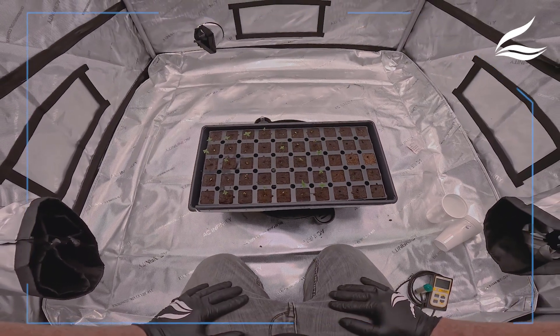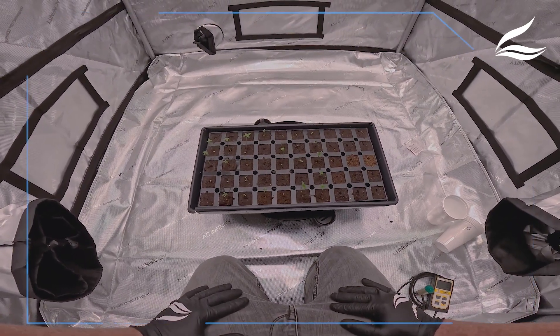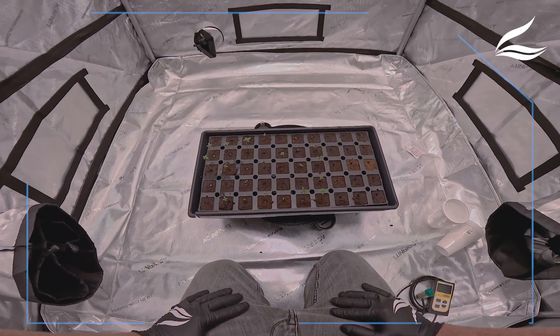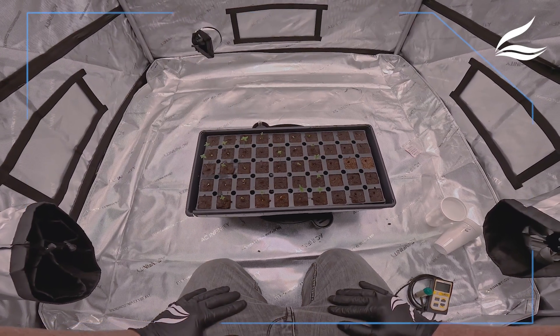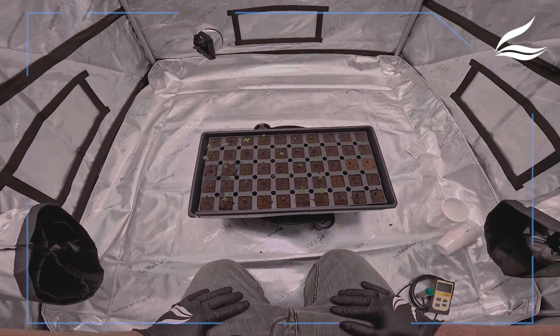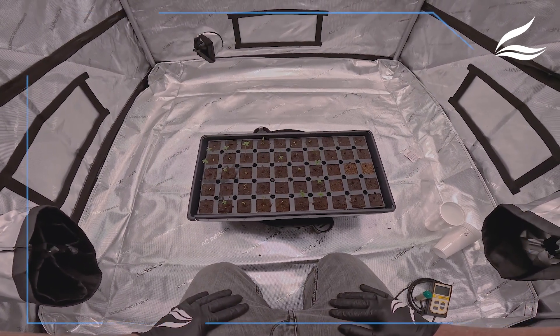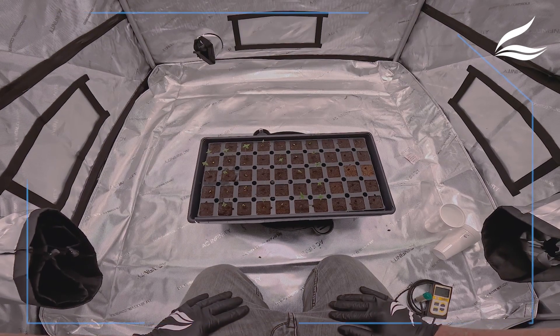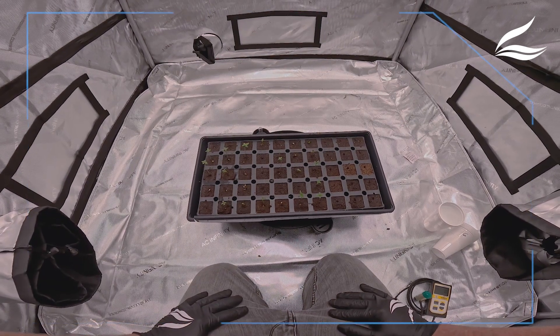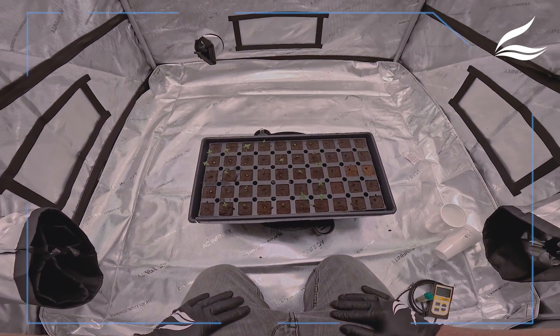At this point, we're not going to introduce any more nutrients to them until they dry out, and then we're going to go with a really low ppm. Once we transplant them, we'll step it up to a little bit of a higher ppm. We'll keep the ppm around 500, around 1 EC, and then we'll step it up from there.